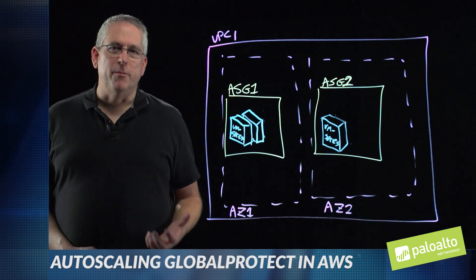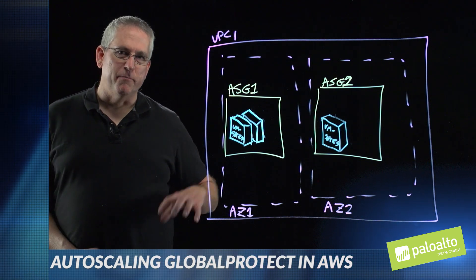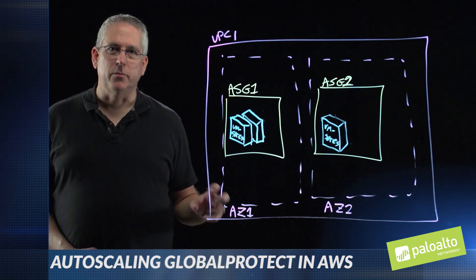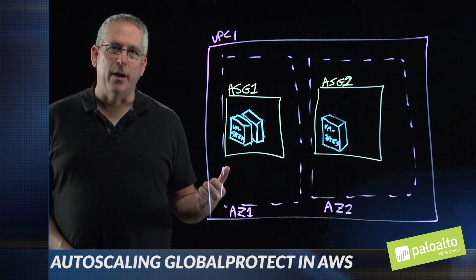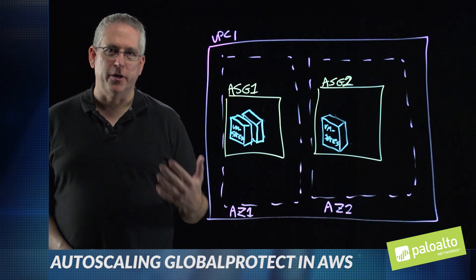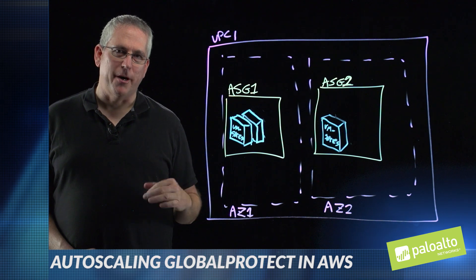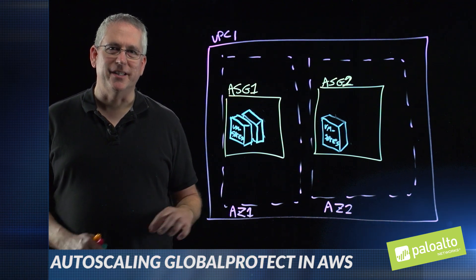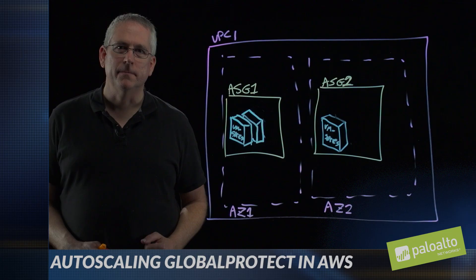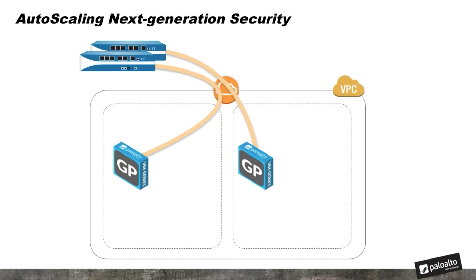Next I'd like to show a demo of an actual scaling event where we've built this infrastructure in AWS. We have a Global Protect portal and gateway and we're going to connect to it, trigger an alarm, and watch AWS automatically scale up the firewalls. In this demo we're looking at a VPC running in an AWS region with two availability zones — one Global Protect gateway per AZ with an IPsec tunnel going back to the corporate firewalls for corporate-destined traffic.